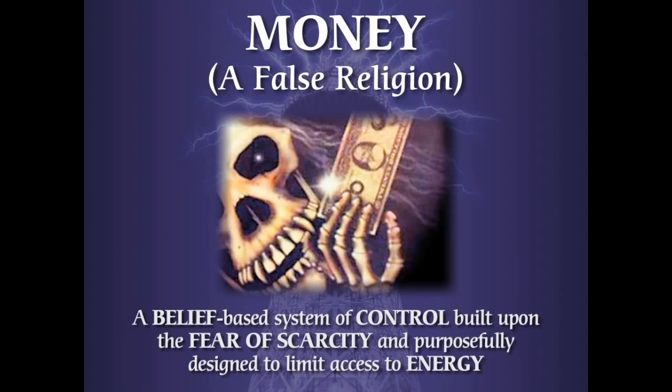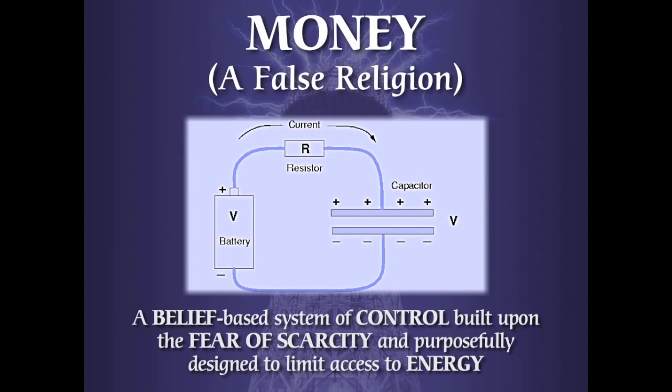People think money is the flow — that's why they call it currency. It's word magic. We call it currency so you will liken it to current in an electrical system, a flow of energy. Nothing of the sort. Then people say it's the capacitance — the store of value — like we store electricity in capacitors. No, it's not the store of value either. What is it? It's the resistance in the system. Money is the thing that stops energy from flowing freely. It's the resistance — if you're talking about DC; if you're talking about AC, it's the impedance.